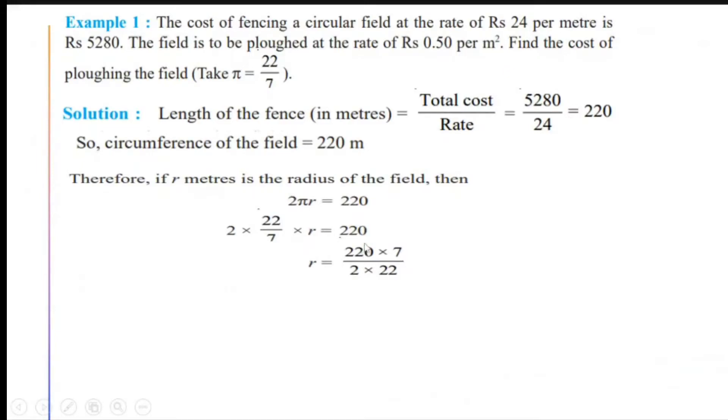Now, easy calculation. If I cancel out this 220 and 22 by 22, I get 10 here. And this 2 cancels with 10 to give me 5. So I get the answer of the radius to be 35.